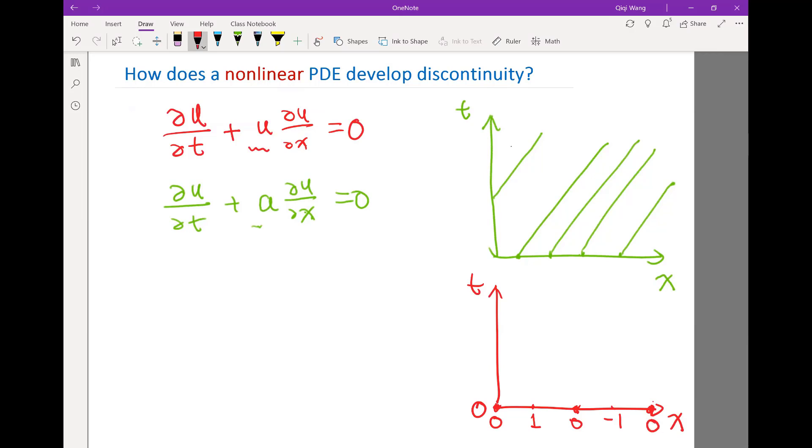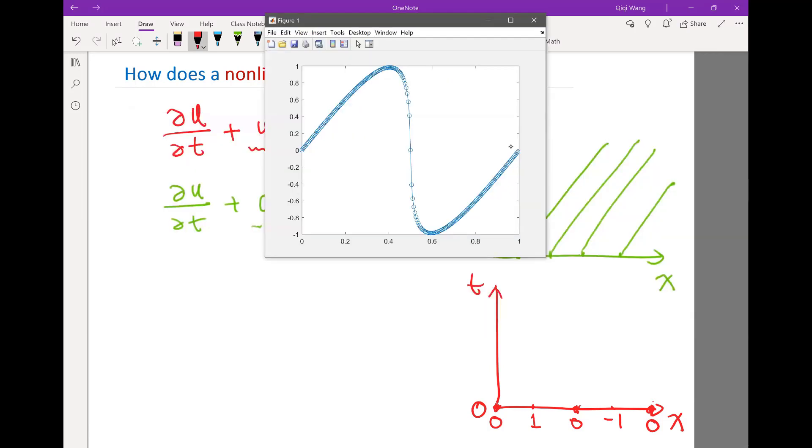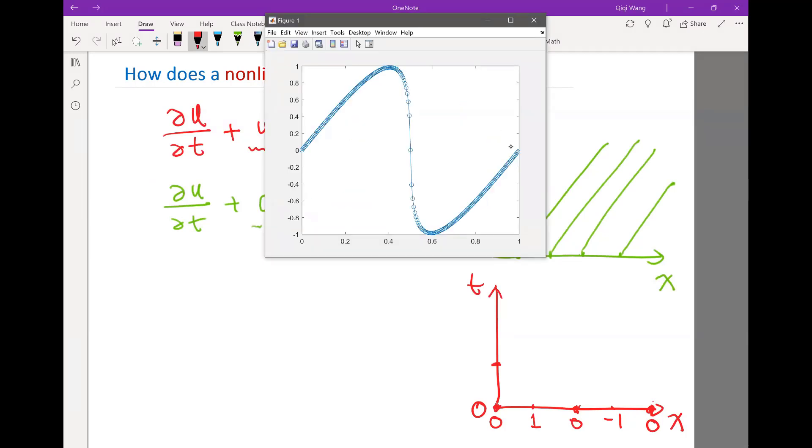And if you track the contour of the solution in the x-t diagram, can somebody try to describe to me how the contour would look like if after a certain amount of time, let's say at this time, the solution has become like what we see on the screen? How do you think the contour would be like?